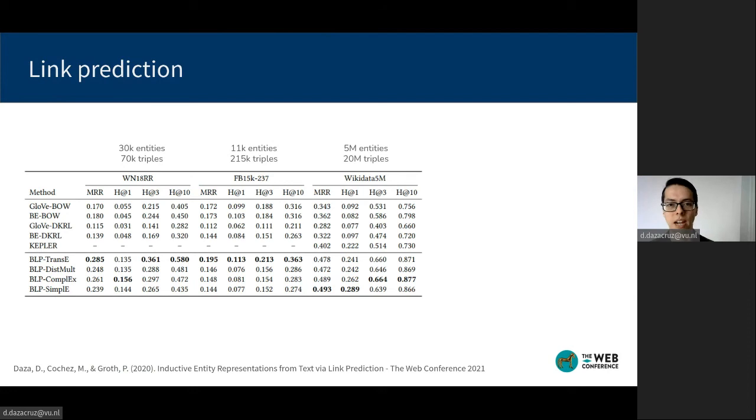In the link prediction task, we experiment over graphs based on WordNet, Freebase, and Wikidata, that range from tens of thousands to millions of entities used during training. And we explicitly evaluate the performance of link prediction involving entities not seen during training.